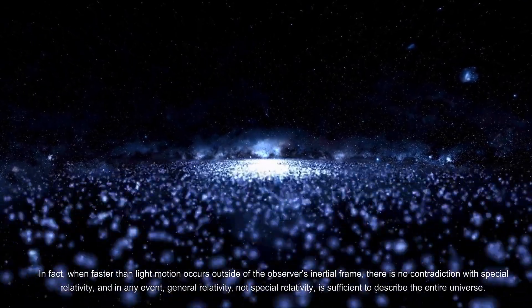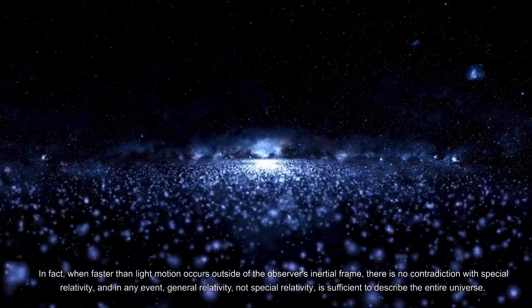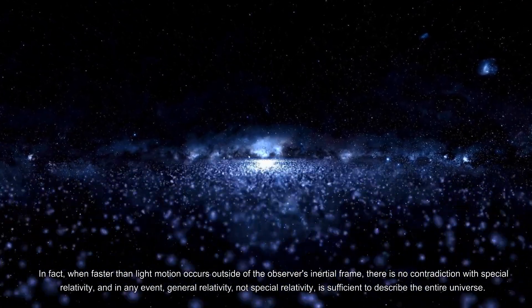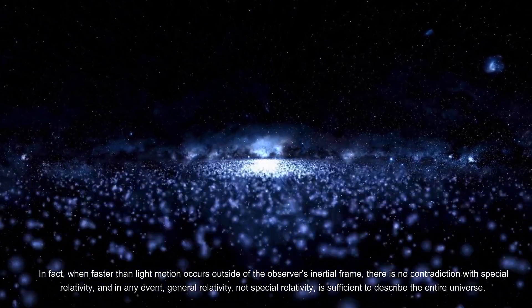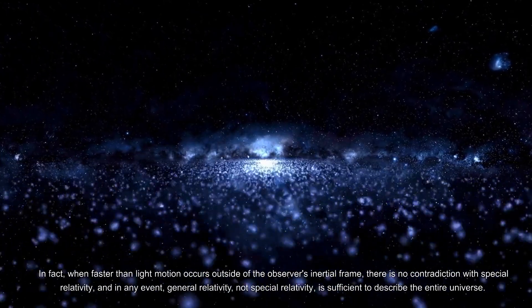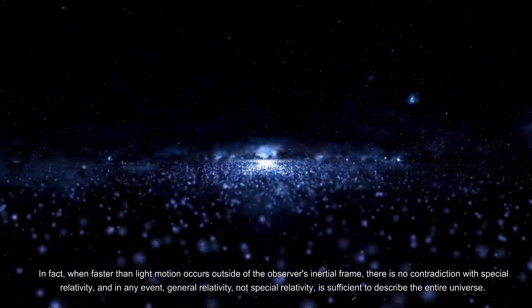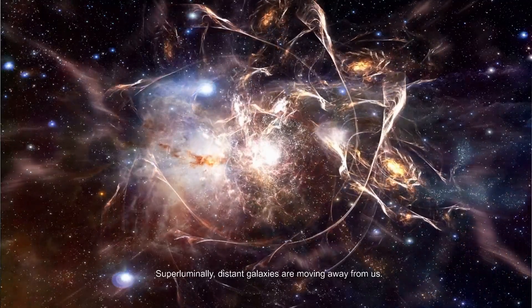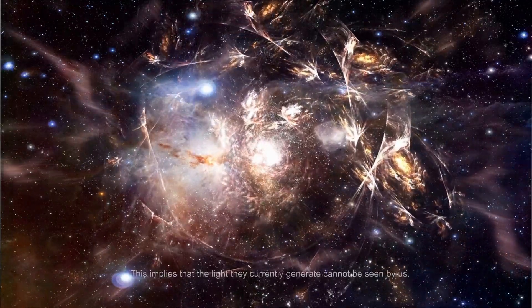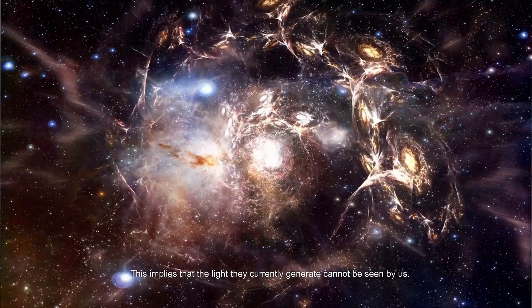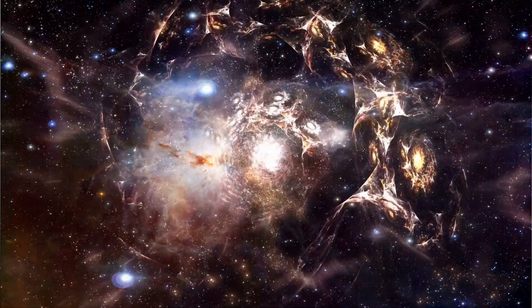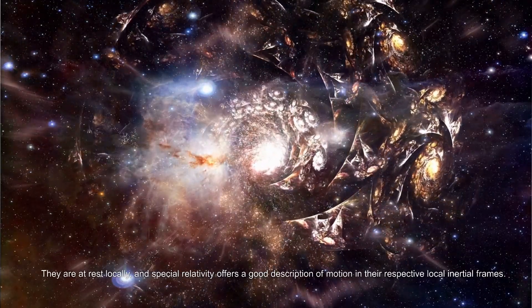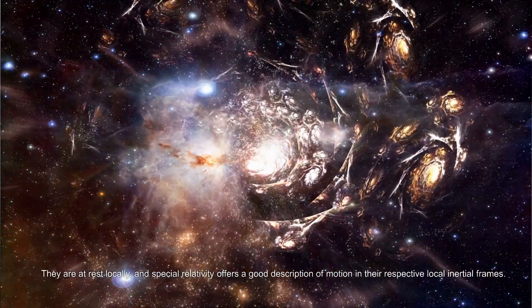The light of an object will reach us if it is closer than the event horizon. In fact, when faster-than-light motion occurs outside of the observer's inertial frame, there is no contradiction with special relativity, and in any event, general relativity, not special relativity, is sufficient to describe the entire universe. Superluminally distant galaxies are moving away from us. This implies that the light they currently generate cannot be seen by us. They are at rest locally, and special relativity offers a good description of motion in their respective local inertial frames.